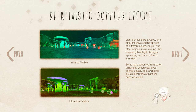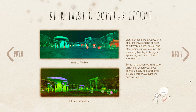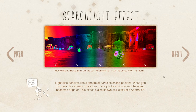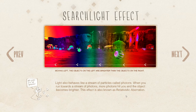Light behaves like a wave — and a particle! Different wavelengths appear as different colors. As you and other objects move around, the wavelength of light changes, appearing redder or bluer to your eyes. Some light becomes infrared or ultraviolet, which your eyes cannot usually see. Moving left, the objects on the left are brighter than the objects on the right — the searchlight effect. Light also behaves like a stream of particles called photons. When you run towards a stream of photons, more photons hit you in the face and the objects become brighter. The effect is also called relativistic aberration.